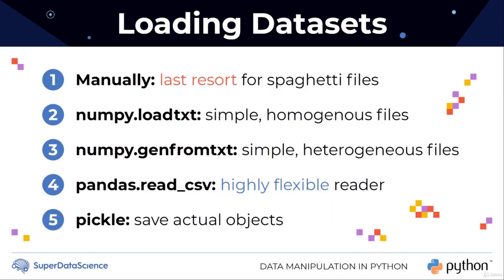Once you actually have a data set, there are fortunately a whole bunch of options. Number one is you can manually write a function in Python to load in your data — open the file, go through it line by line, extract the data you want and then close the file — but try to never do this. Manually loading a file should be the absolute last resort for files that refuse to follow any sort of sane file format. Any one of the other functions would load the data faster, better, and in more formats that are useful to you.